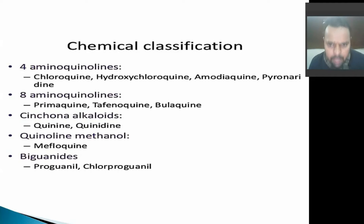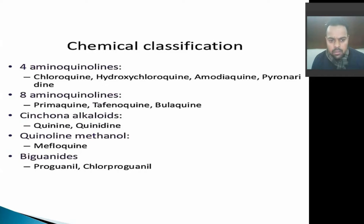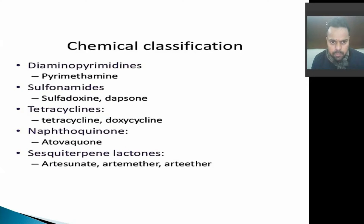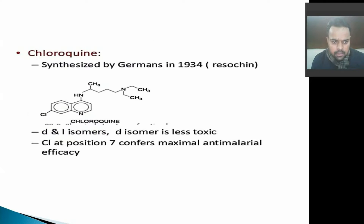There are basically four chemical classifications of anti-malarial drugs: four-aminoquinolines — chloroquine and hydroxychloroquine; eight-aminoquinolines — primaquine; cinchona alkaloids — quinine; biguanides — proguanil; diaminopyrimidines — pyrimethamine; sulfonamides — sulfadoxine; and tetracycline antibiotics. Here is the structure of chloroquine, which is the main drug for the treatment of malaria.